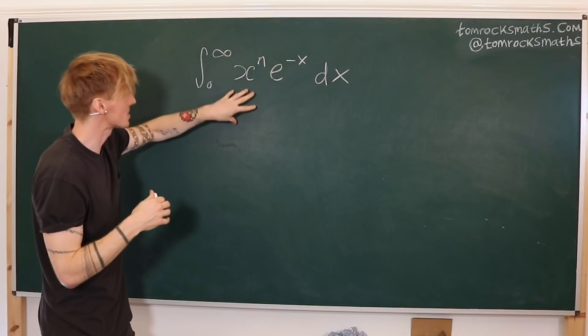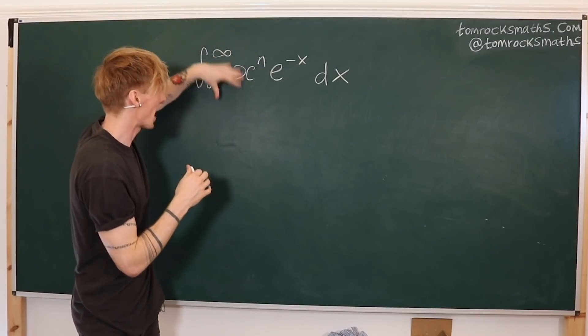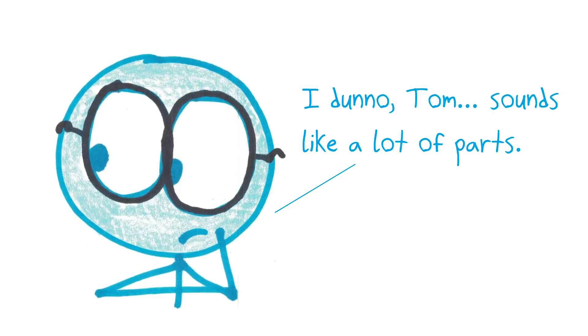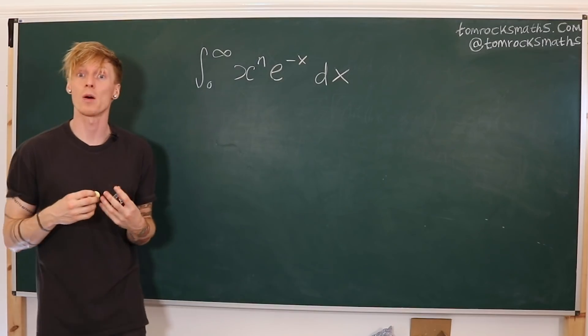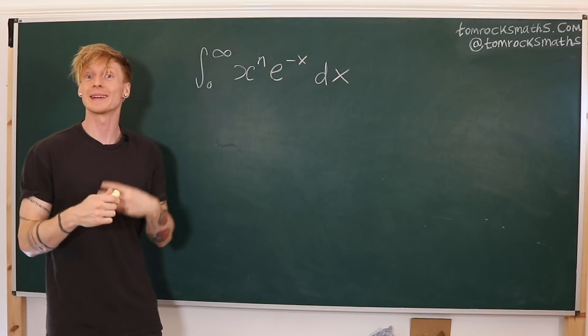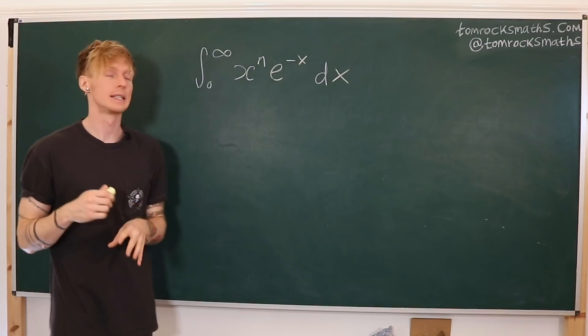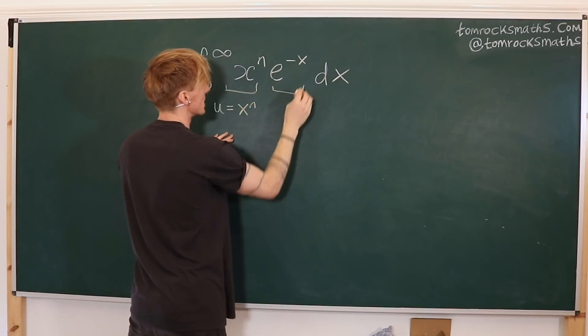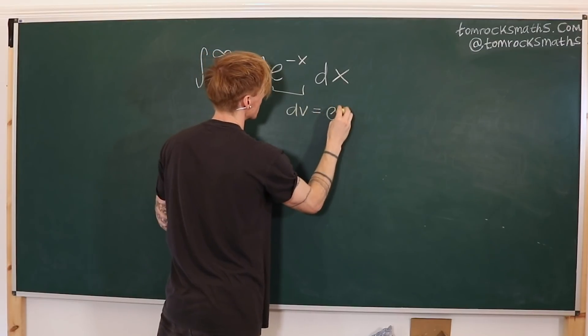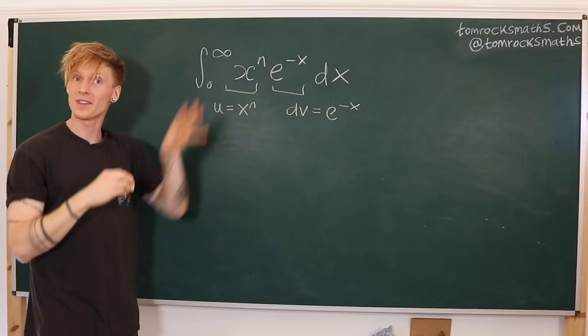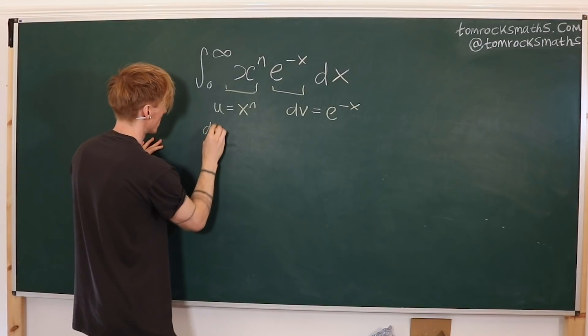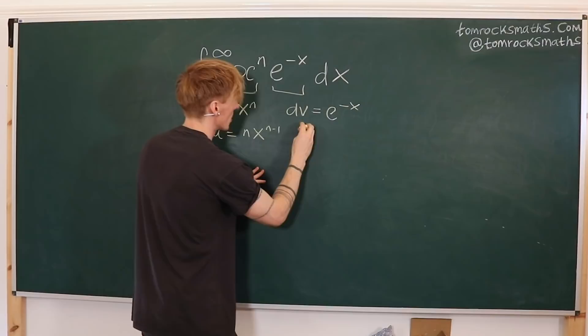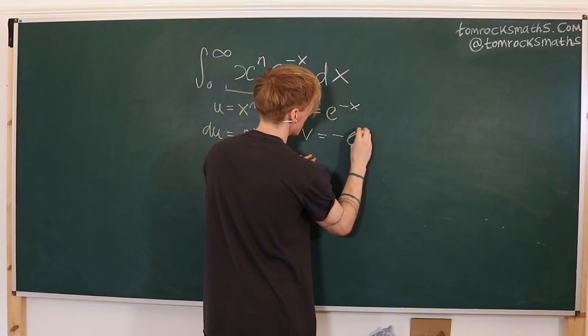So if we do this enough times, we will hopefully get down to a 0 power on the x, and then some kind of exponential function that hopefully we can integrate. The first step in any integration by parts is to figure out what am I differentiating, what is my u, and what am I integrating, what represents dv. So here x to the n will be u, and dv will be given by e to the minus x. Now we want to keep differentiating the power of x. So du equals n x to the n minus 1. And we want to integrate the exponential, so v is going to be minus e to the minus x.